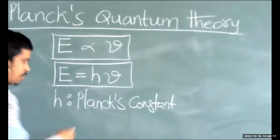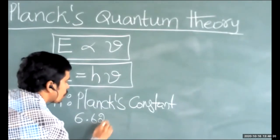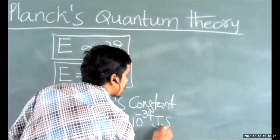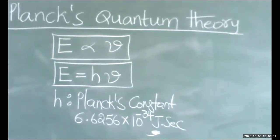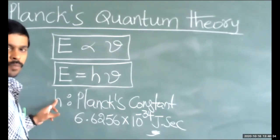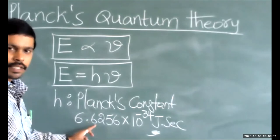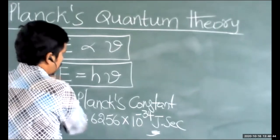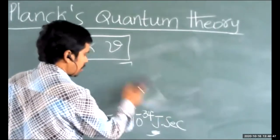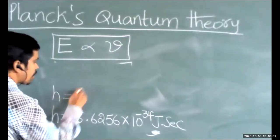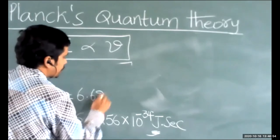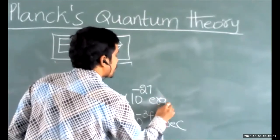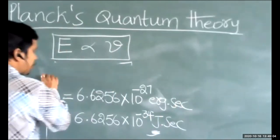The value of Planck's constant h is given as 6.6256 × 10⁻³⁴ joules·second. Observe the unit — joules·second. Planck's constant h = 6.6256 × 10⁻³⁴ joules·second. The Planck's constant value is also represented in ergs: 6.6256 × 10⁻²⁷ ergs·second. This is the constant value we have to remember.